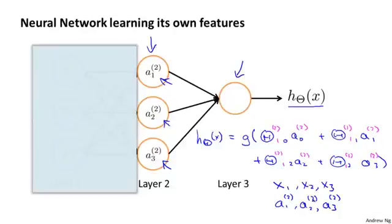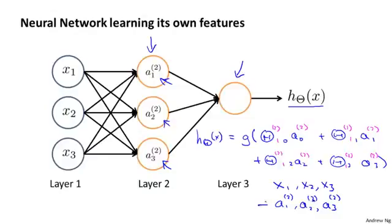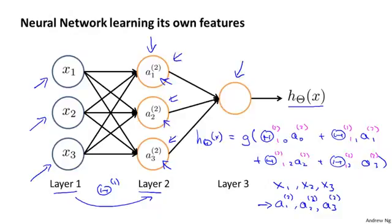And the cool thing about this is that the features a1, a2, a3, they themselves are learned as functions of the input. Concretely, the function mapping from layer 1 to layer 2, that is determined by some other set of parameters, theta 1. So it's as if the neural network, instead of being constrained to feed the features x1, x2, x3 to logistic regression, it gets to learn its own features, a1, a2, a3, to feed into logistic regression. And as you can imagine, depending on what parameters it chooses for theta 1, you can learn some pretty interesting and complex features. And therefore, you can end up with a better hypothesis than if you were constrained to use the raw features x1, x2, x3, or if you were constrained to, say, choose the polynomial terms x1, x2, x2, x3, and so on.